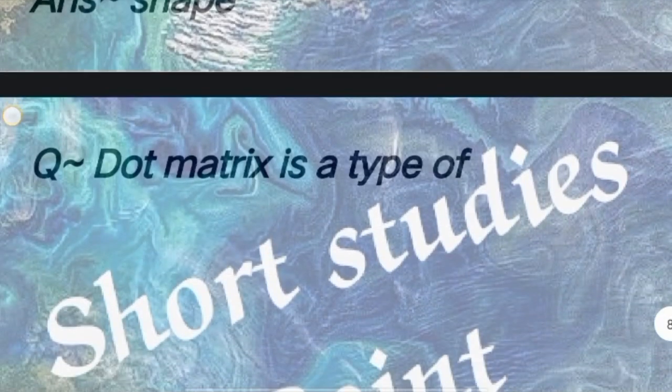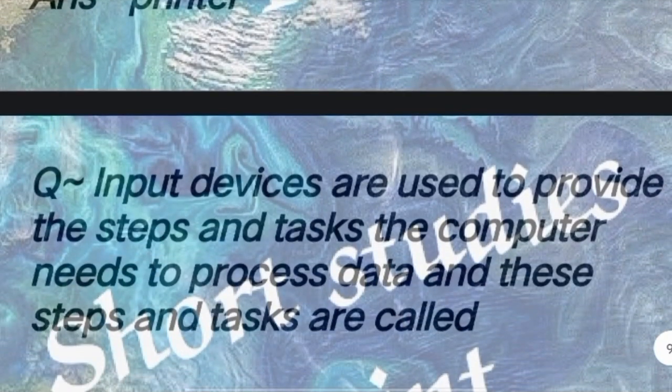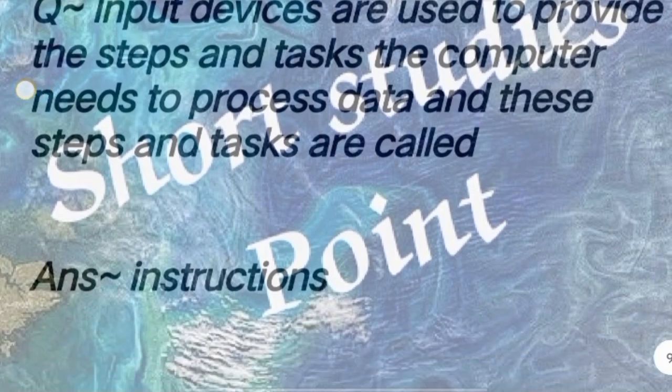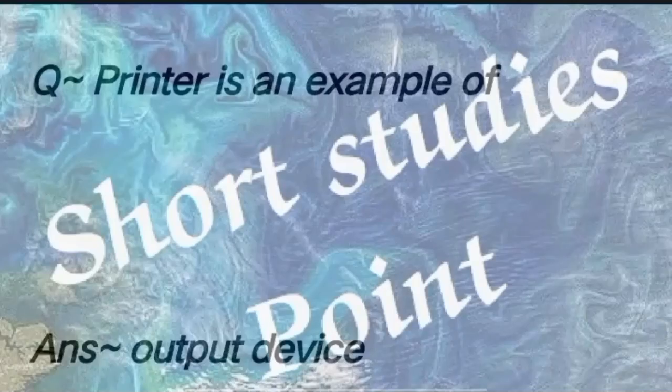Next question: Dot matrix is a type of? Answer: Printer. Next question: Input devices are used to provide the steps and tasks the computer needs to process data, and these steps and tasks are called? Answer: Instructions.